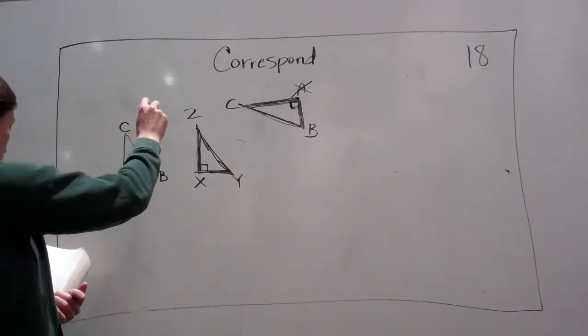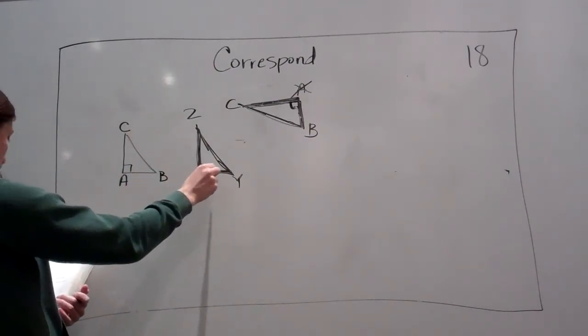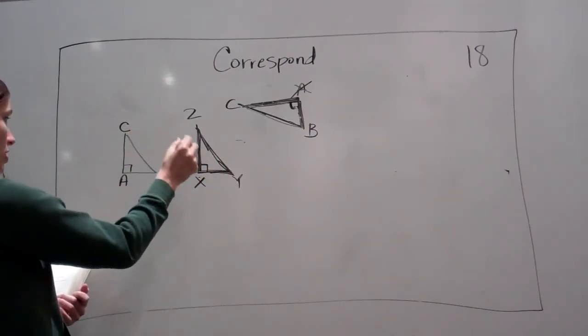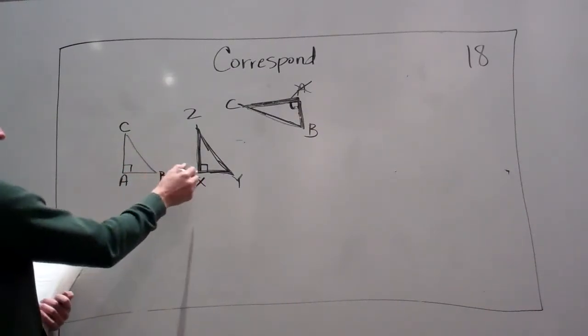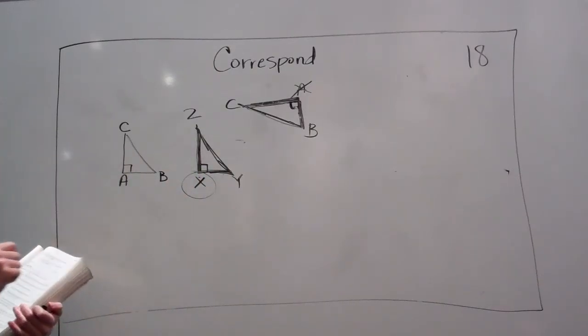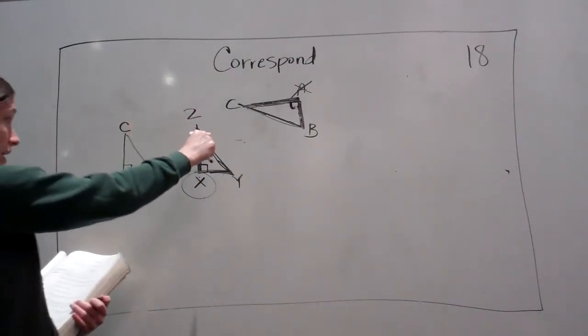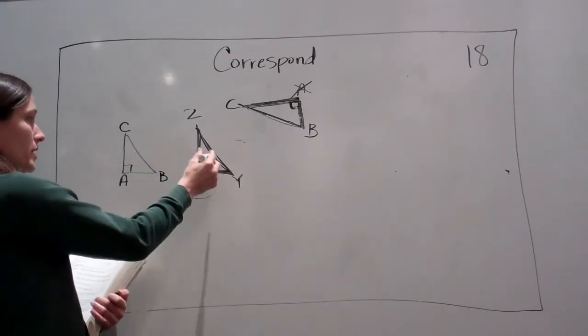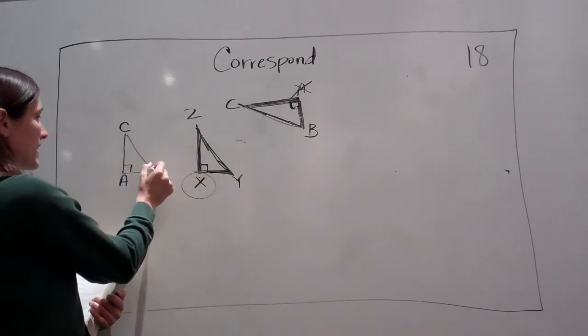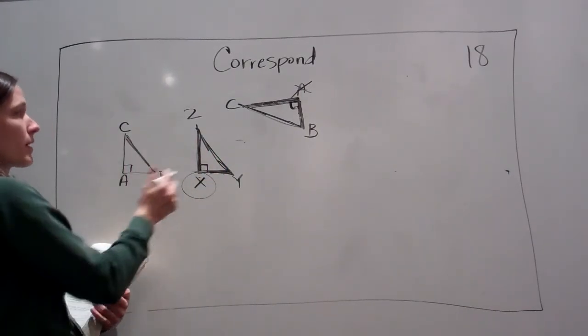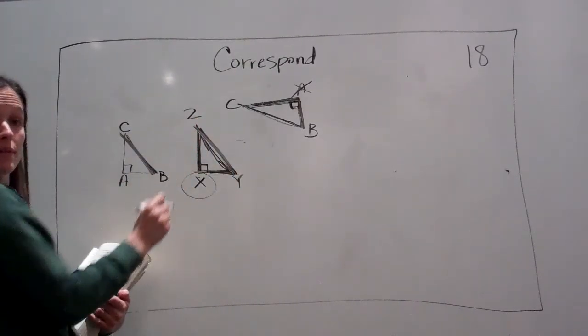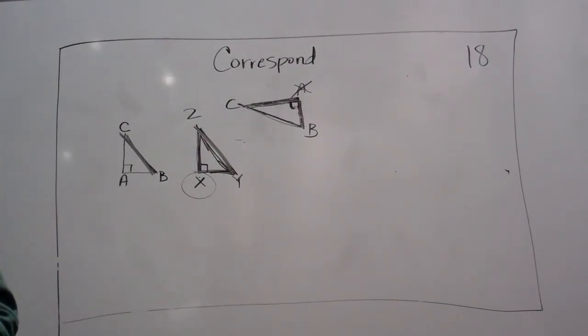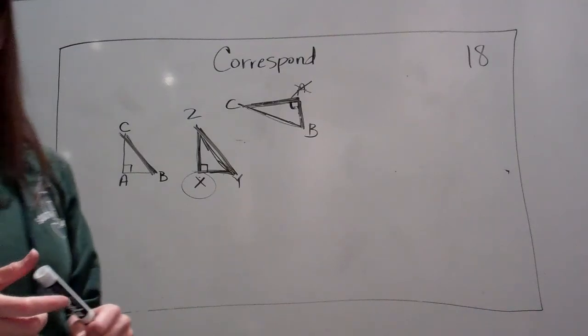So, in this one it says, which angle in XYZ corresponds to angle A in ABC? X does. Very good. Very good. Which side in this one corresponds to BC? YZ. Right? BC, YZ. They got it? All right. Good to go. That is lesson 18. How are we doing on time?